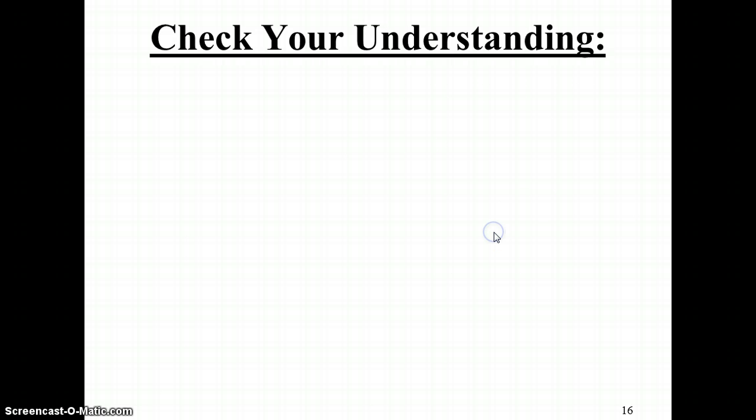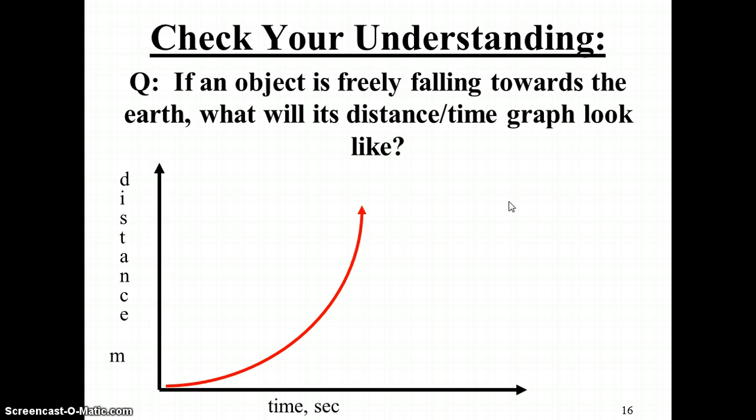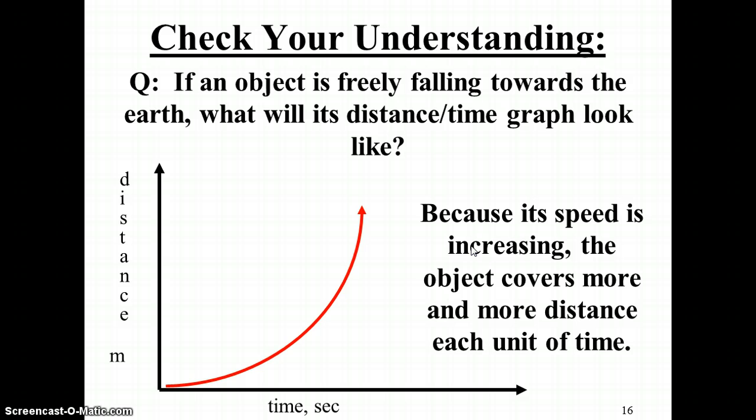Lastly, we can also look at the distance versus time graph for the same situation. And you'll wind up getting something that's not a line at all. You'll wind up getting a parabolic graph, sometimes referred to as a quadratic. Notice the distance is zero at the beginning, and because the object is picking up speed, it'll pick up distance quicker and quicker and quicker. It kind of goes along with the formula that we've already looked at: distance equals one half a t squared. And notice the time is squared, and when you have a graph that looks like y equals x squared, you wind up getting a parabola.